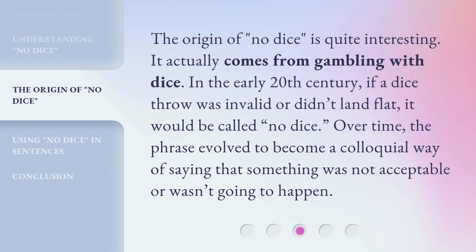The origin of 'no dice' is quite interesting. It actually comes from gambling with dice. In the early 20th century, if a dice throw was invalid or didn't land flat, it would be called 'no dice.' Over time, the phrase evolved to become a colloquial way of saying that something was not acceptable or wasn't going to happen.